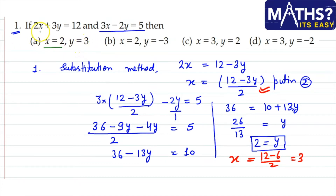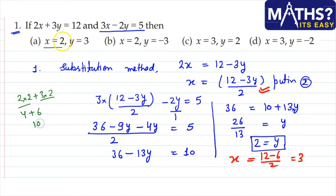Let's verify by trying values from the answer options. For instance, trying certain values: 2×2=4, 3×2=6, 6 and 4 gives 10. This equation is not satisfied, so that option is not the answer. Here x=2 is written, so this doesn't satisfy either.